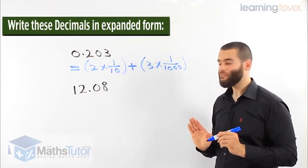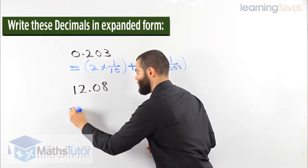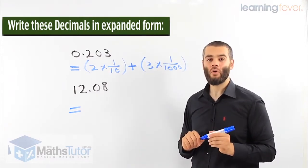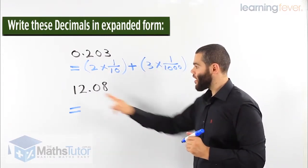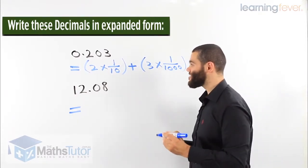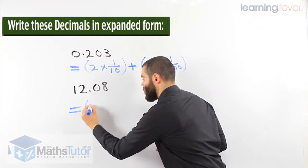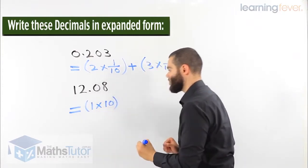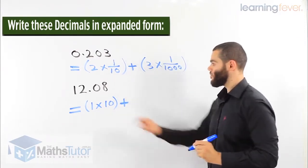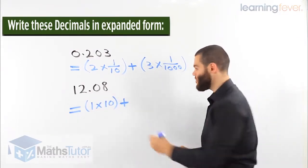Another example here. I look at it and I say, okay, 12.08. Now the 12, I look at the 1. The 1 is in the place value of tens. So 1 times 10. Then plus. The 2 is in the ones column.